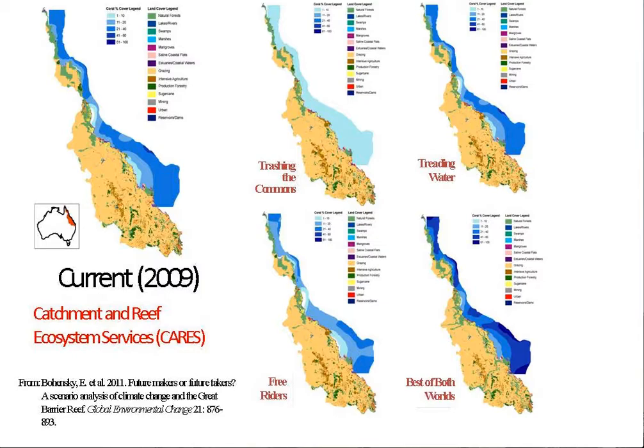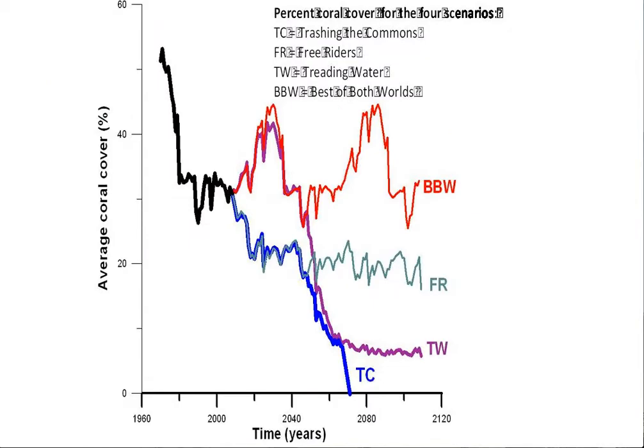We did another study using scenarios for the Great Barrier Reef in Australia and its catchment, based on uncertainties about climate change and regional land use policies. From that analysis, we could estimate the impacts on coral cover for the Great Barrier Reef, linking that with sophisticated modeling studies.